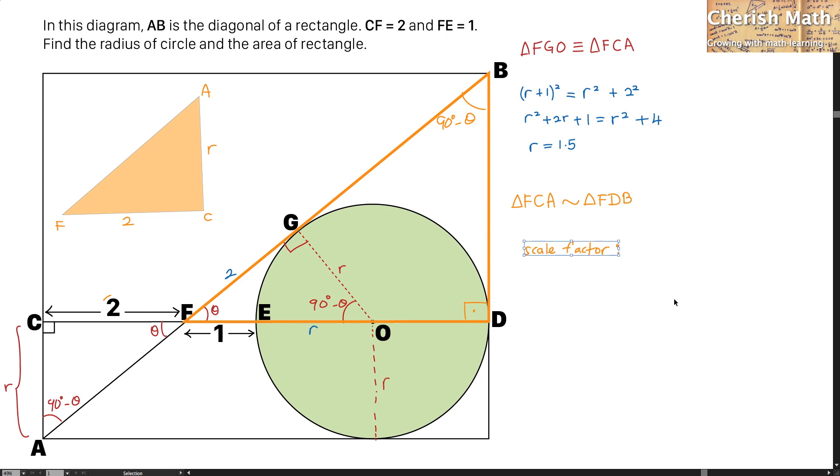I'm now going to use the scale factor to solve the problem for the length of BD. For this length BD and the length of AC is similar to each other. Now, if I use the length of BD divided by AC which is R, this is going to produce the same scale factor.